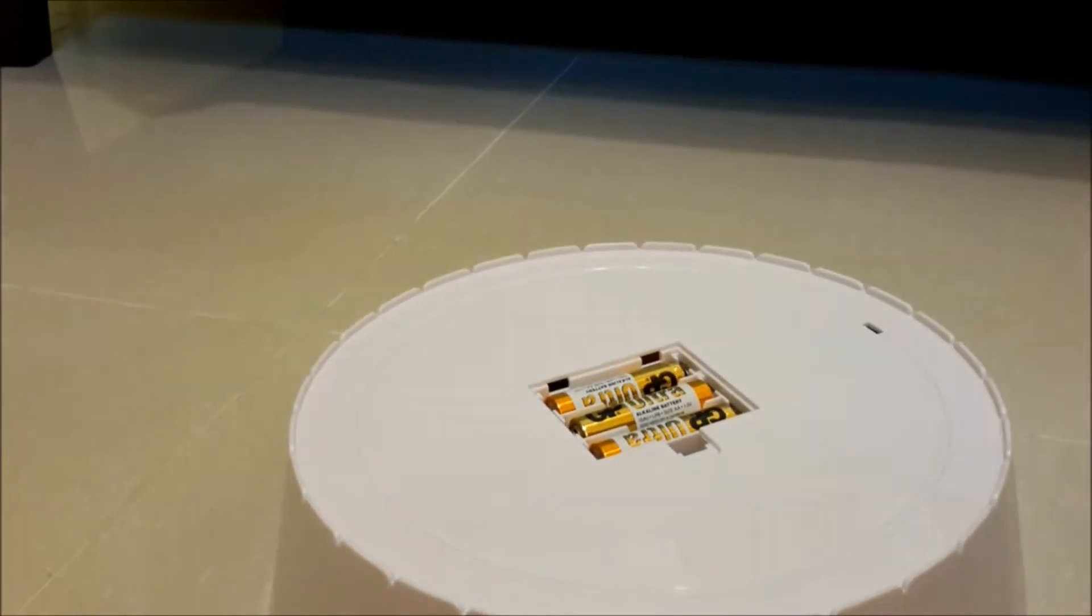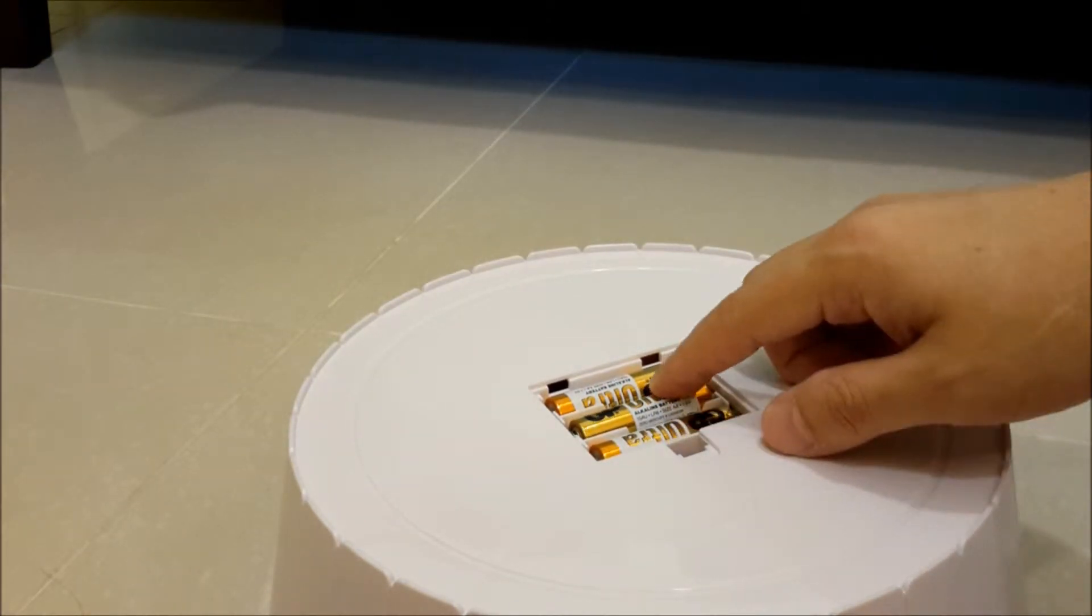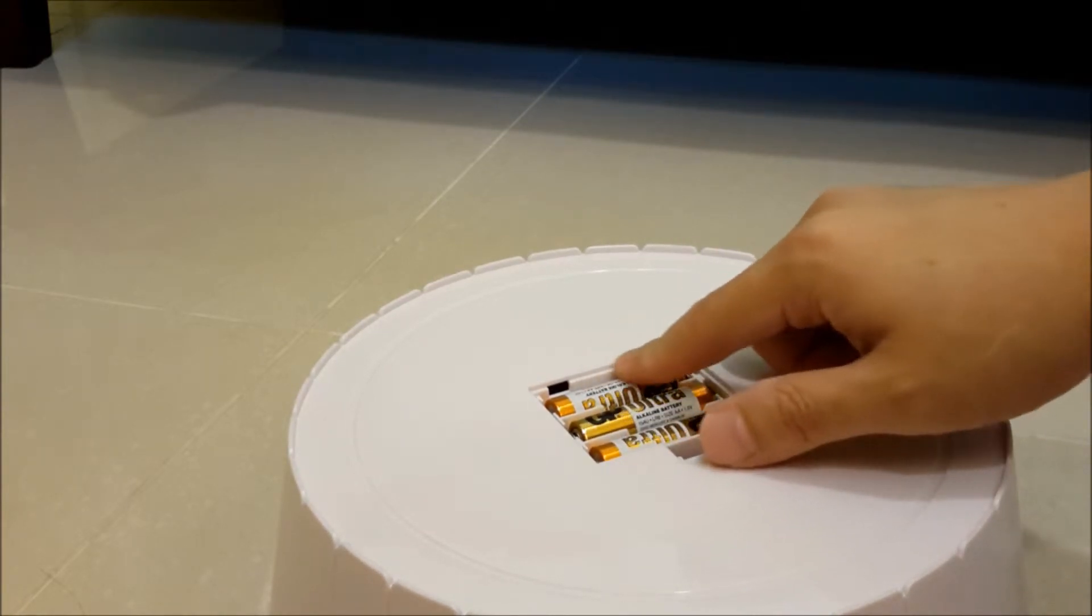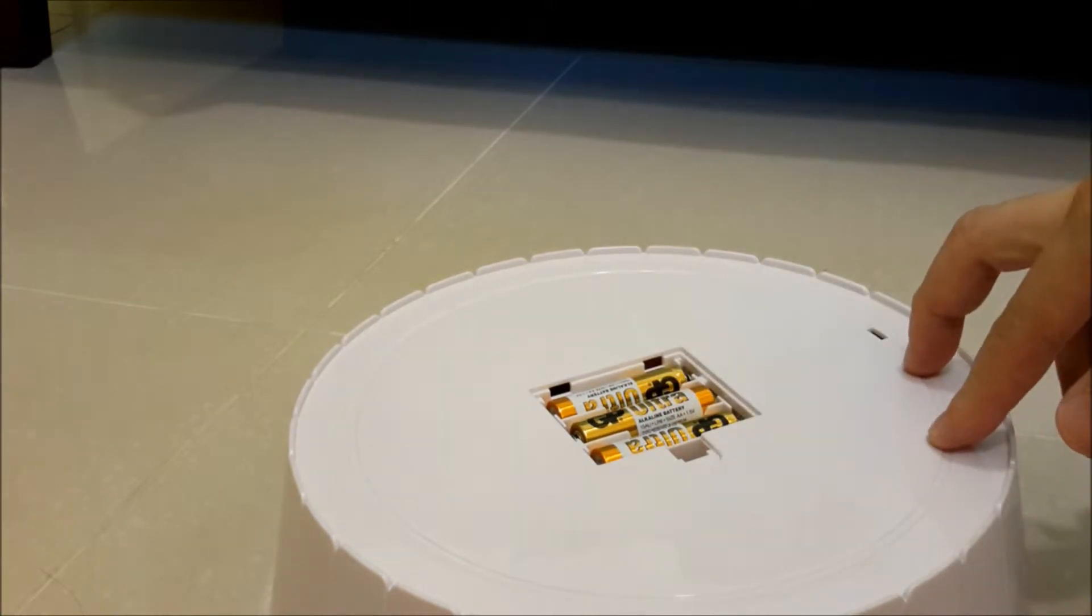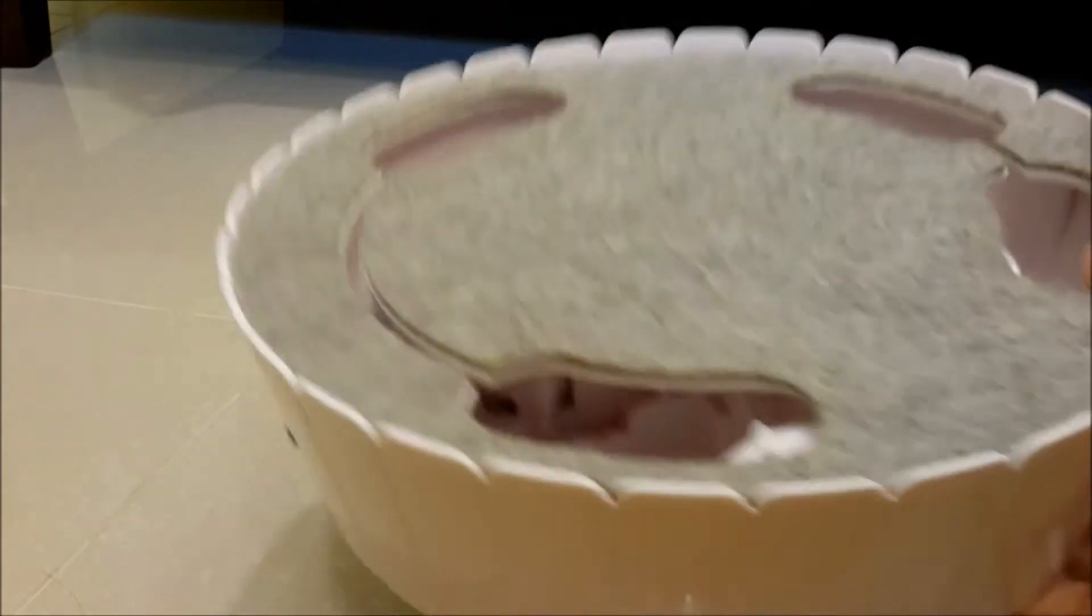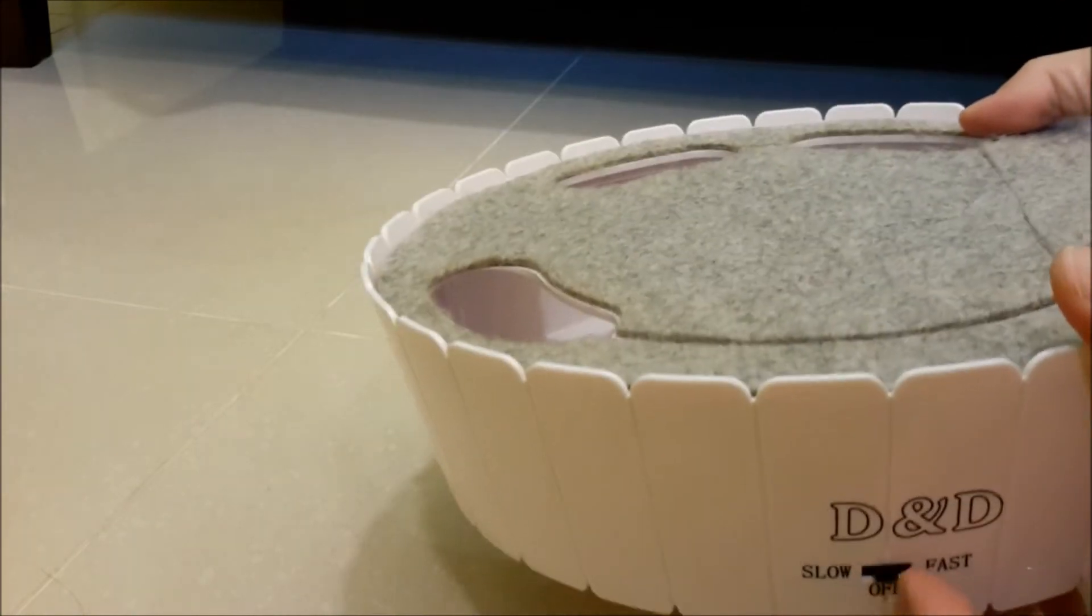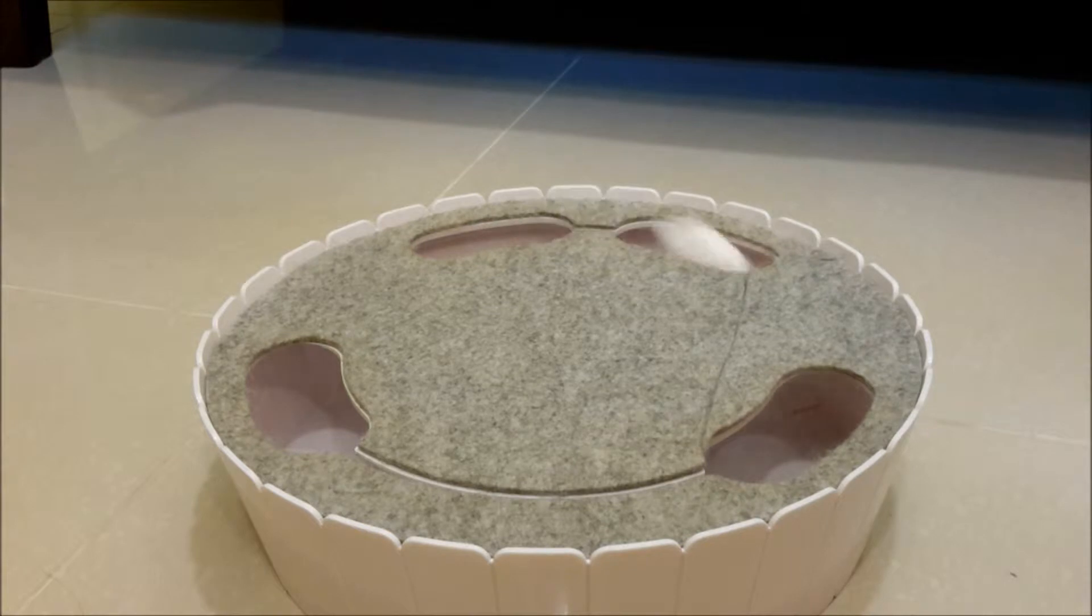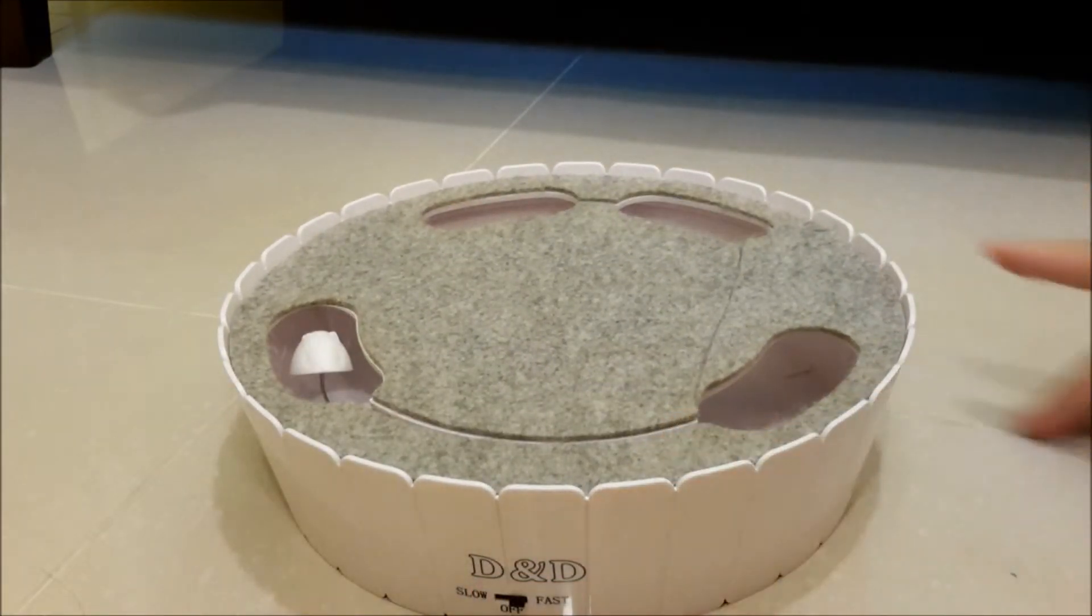So you can see here this is running on three regular double-A batteries, running on each one 1.5 volts, and you have a total of about 4.5 volts here. This is actually a cat's toy with the mouse here. Let's switch to slow mode and see how fast it goes on the regular battery size.